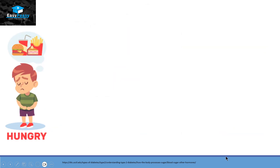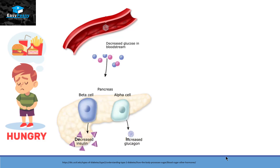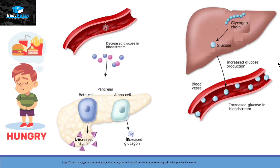If we are hungry and didn't take a meal, the glucose level in our bloodstream decreases. Again, signals are sent to the pancreas — beta cells will produce less insulin and alpha cells will produce more glucagon. This increased glucagon signals liver cells to use the stored form of glucose, which is glycogen, and convert it back into glucose. This glucose goes into the bloodstream to balance glucose concentration. This process of converting glycogen into glucose is called glycogenolysis.